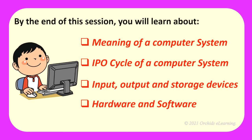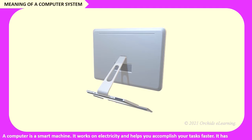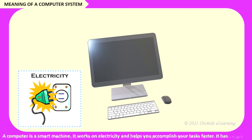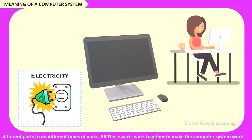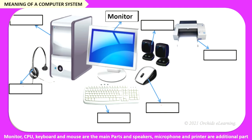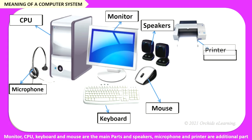A computer is a smart machine. It works on electricity and helps you accomplish your tasks faster. It has different parts to do different types of work. All these parts work together to make the computer system work. Monitor, CPU, keyboard, and mouse are the main parts. And speakers, microphone, and printer are additional parts.